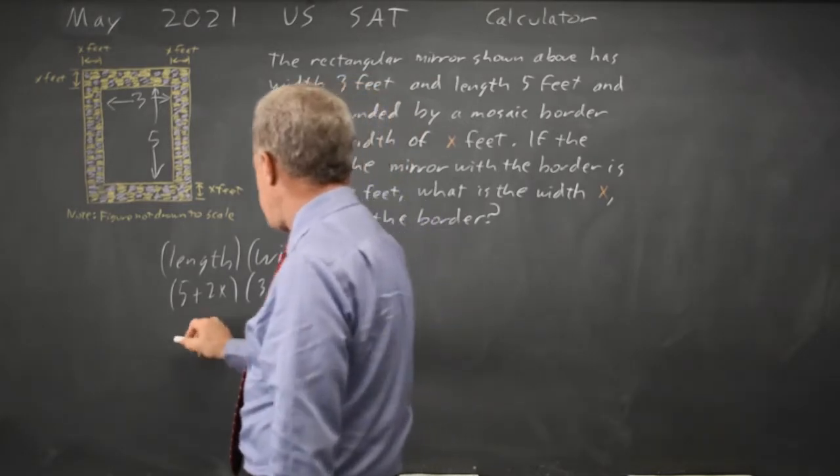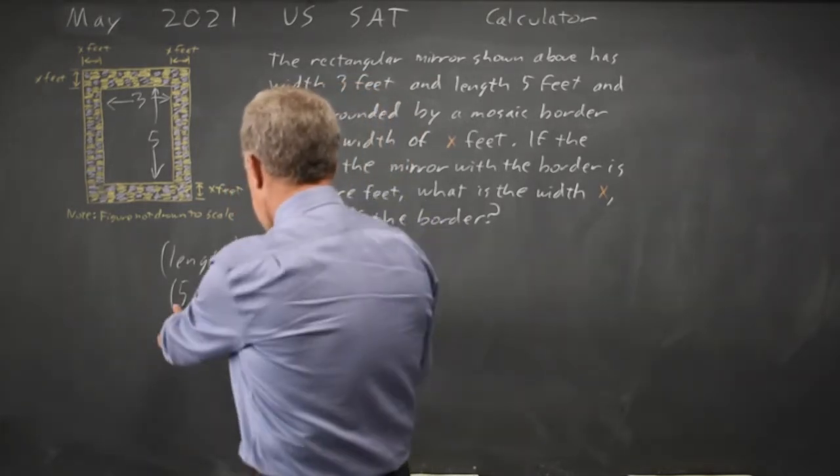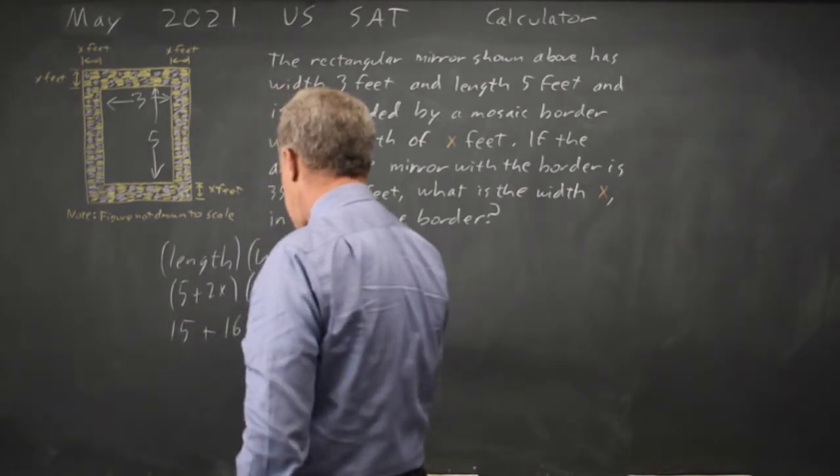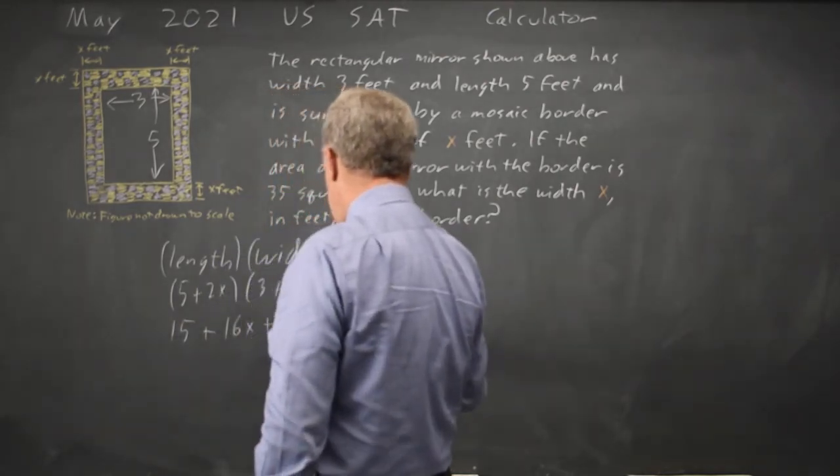FOIL on the left gives me 15 plus 10X plus 6X plus 16X plus 4X squared, and that's equal to 35.